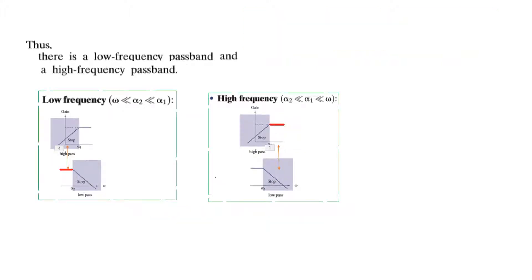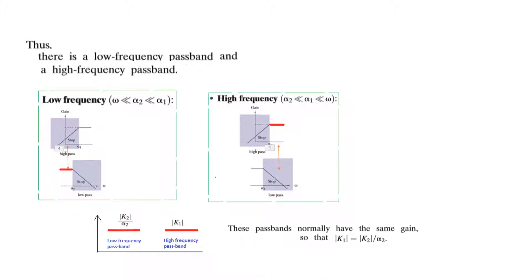To summarize: there is a low frequency pass band and a high frequency pass band. At low frequency, the low pass filter's pass band dominates; at high frequency, the high pass filter's pass band dominates. Plotting both magnitudes gives a low frequency pass band and a high frequency pass band. Since both pass bands normally have the same gain, we can say k1 = k2 / α2.